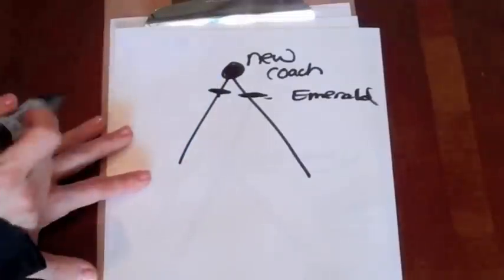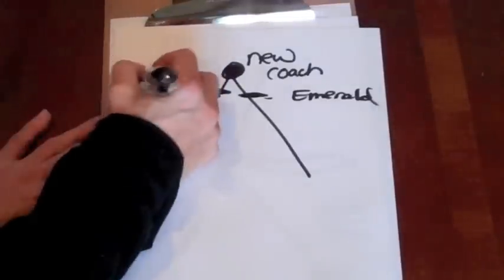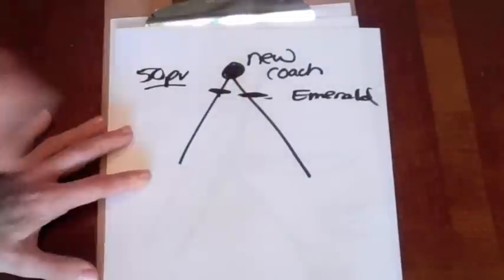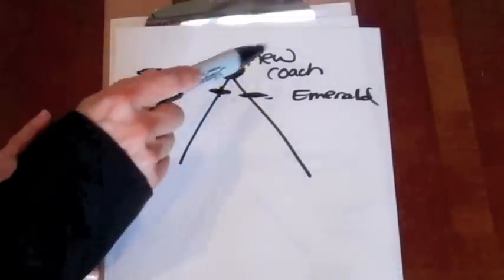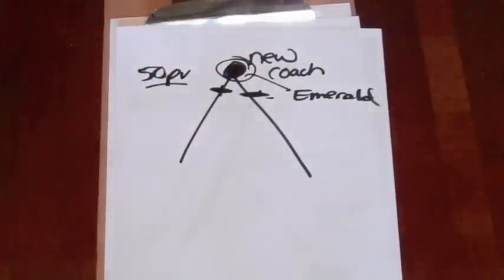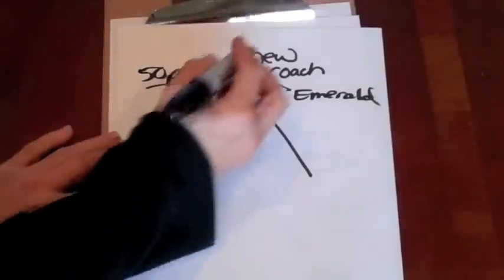Both of these, all three of these people have to have a point value of 50 points at least on product. So if everybody, say, for instance, got on Shakeology, you are Emerald.